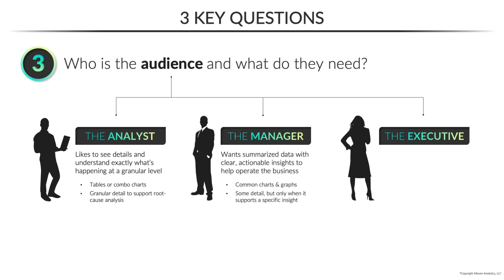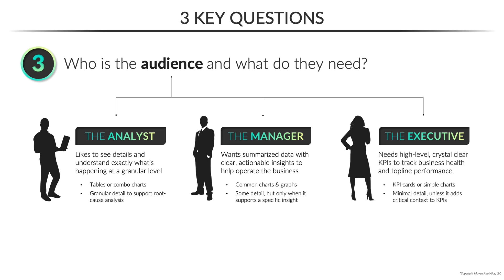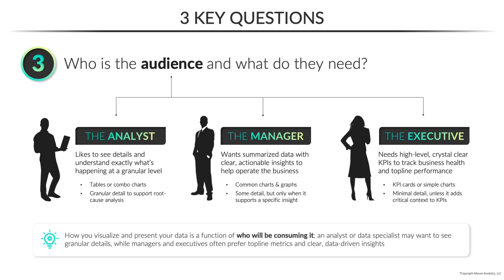The manager typically wants more summarized data that leads to clear insights to help them operate the business. For the manager audience, it's best to stick with common charts and graphs and only enough detail to support specific insights or recommendations. And finally, the executive needs high-level, crystal-clear KPIs to track business health and top-line performance — things like KPI cards or very simple charts with minimal detail, unless it adds critical context. Bottom line: how you choose to visualize and present data is very much a function of who will be consuming it. Analysts may want granular details or complex charts, while managers or execs often prefer high-level metrics with a focus on clear data-driven insights.